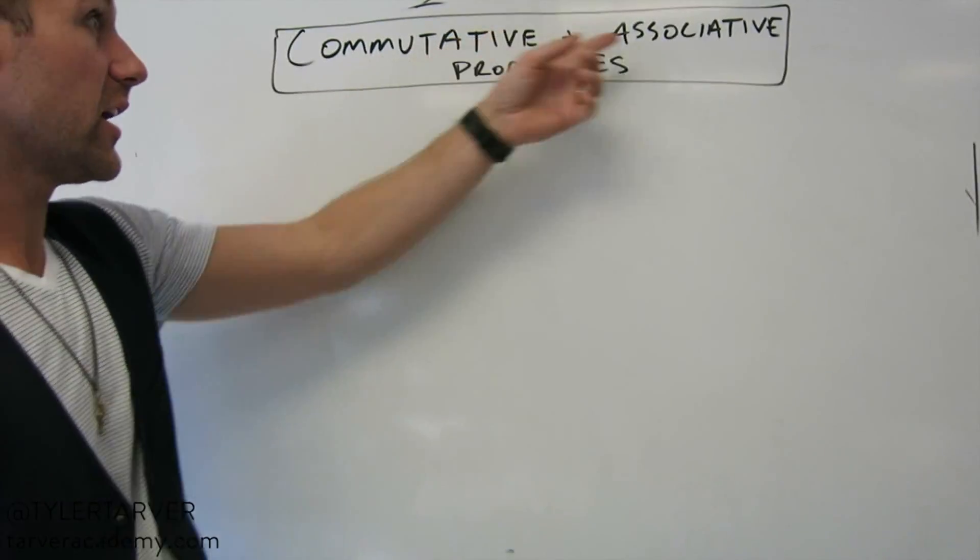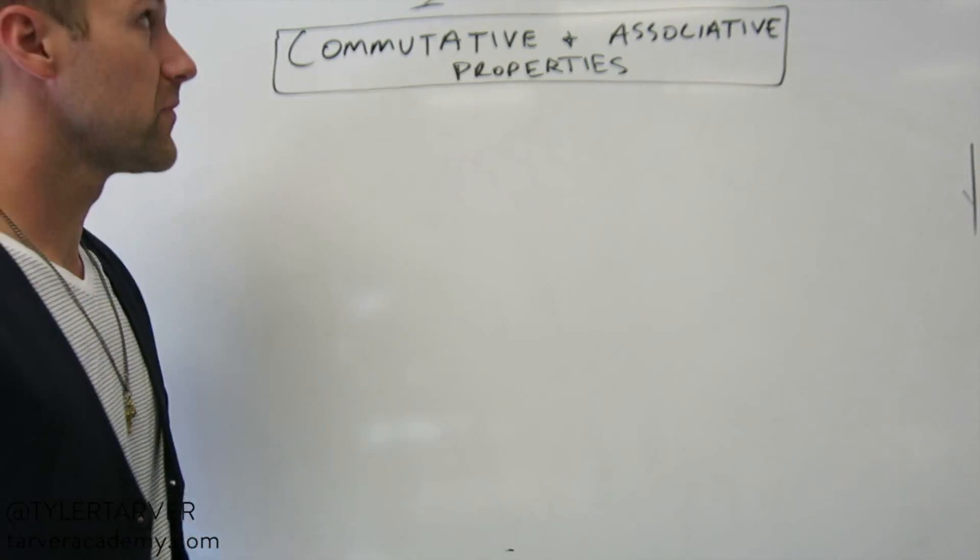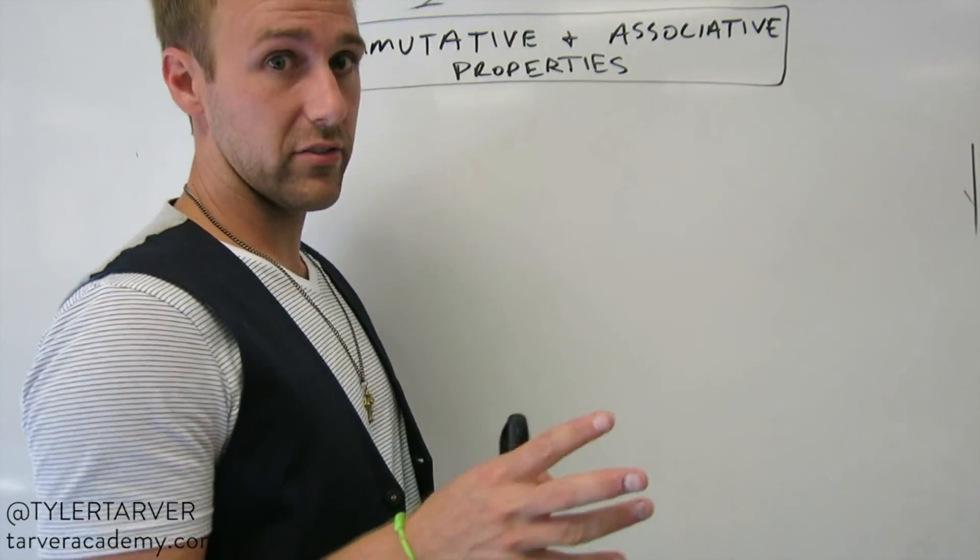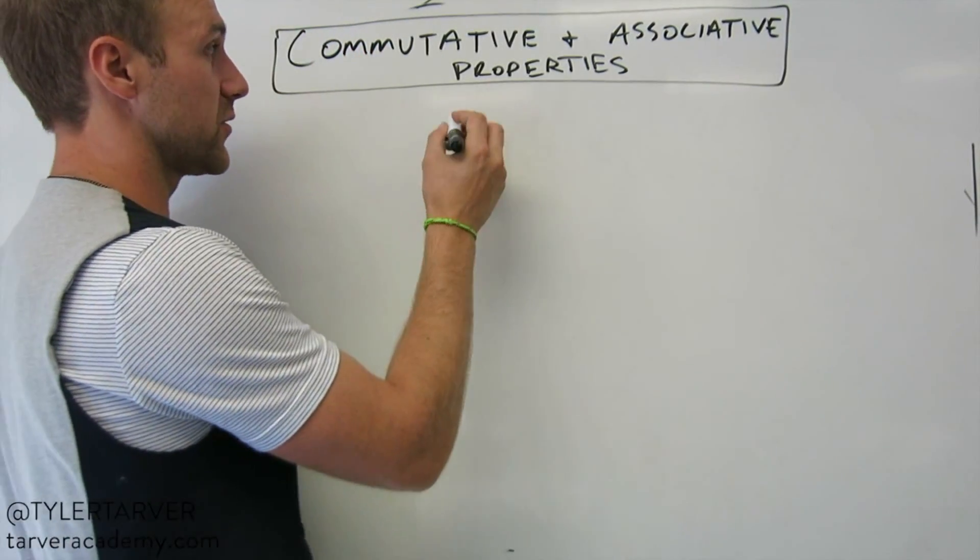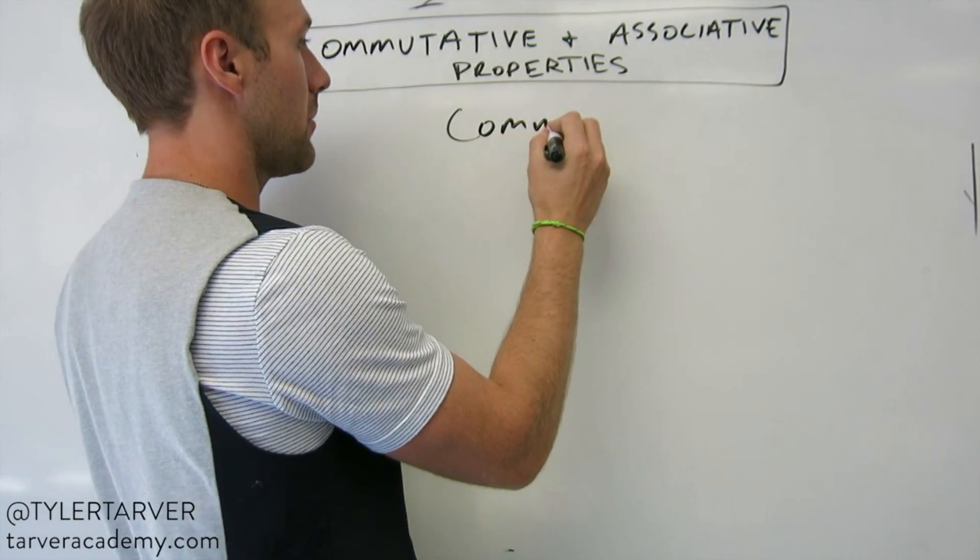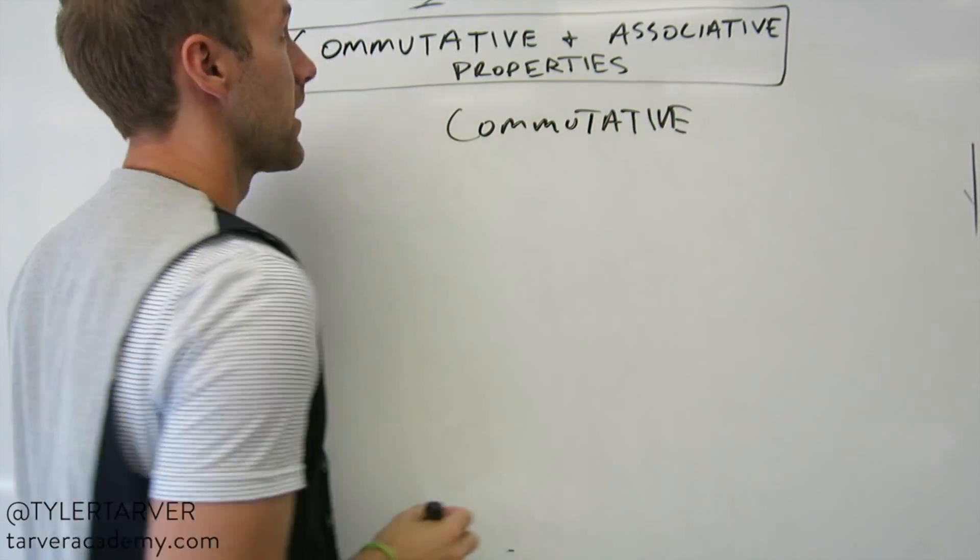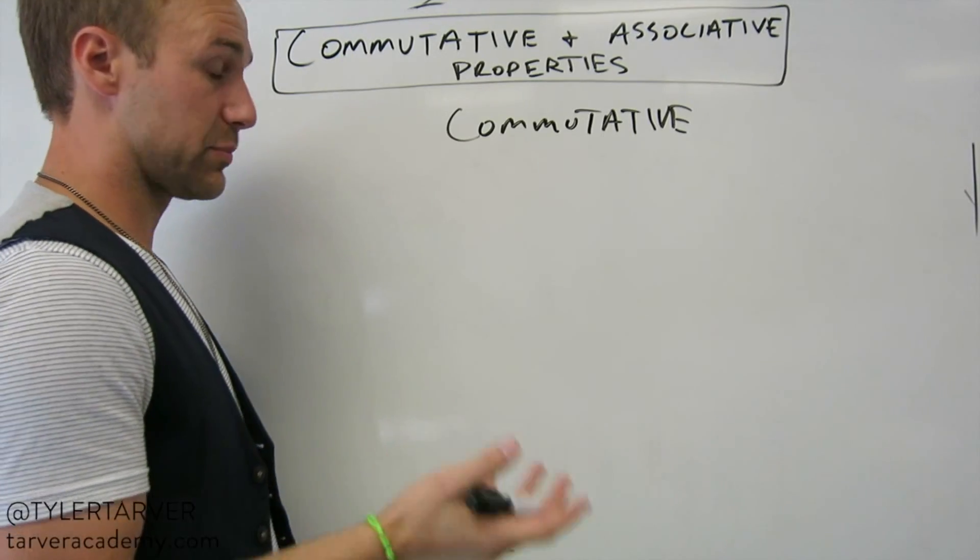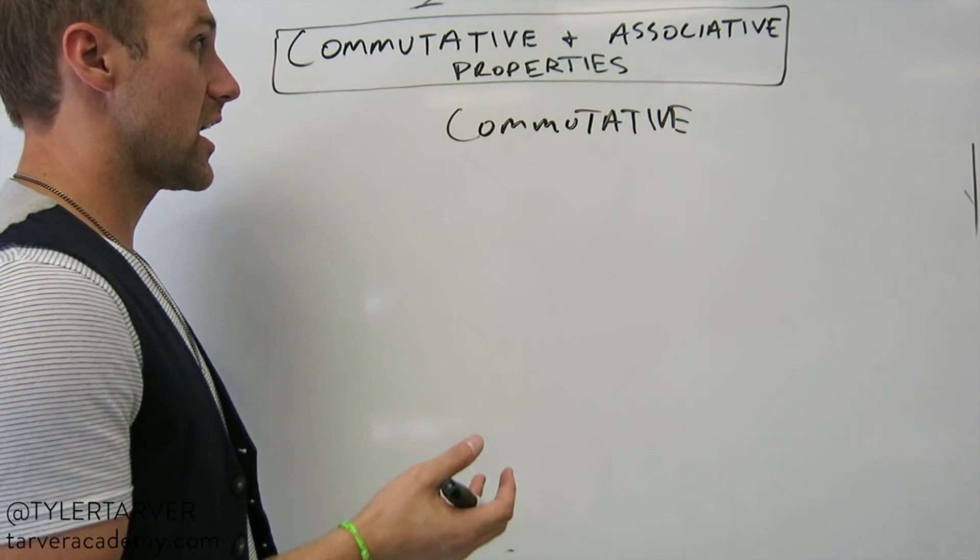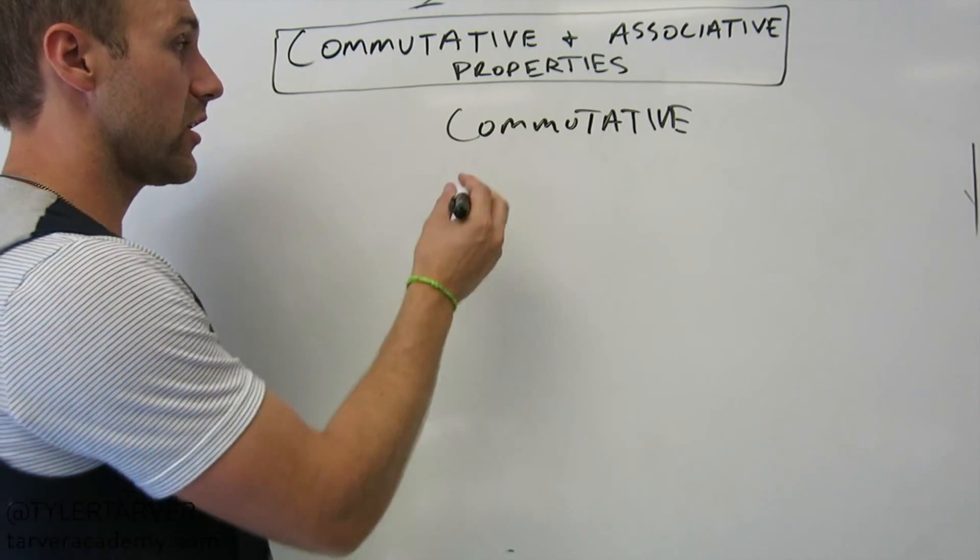We want to learn about the commutative and associative properties. Okay, so we'll start with commutative. First off, it's difficult to say commutative. Essentially, what this property tells us is that you can...